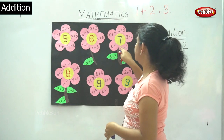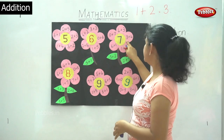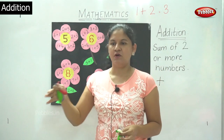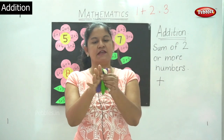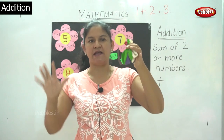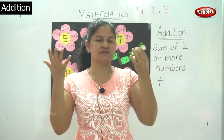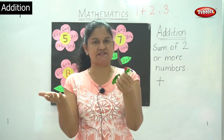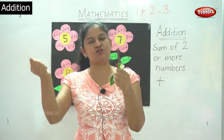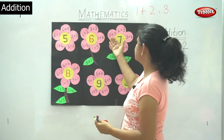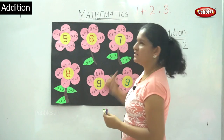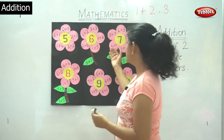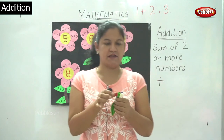So 4 plus 3 gives me 7 or 3 plus 4 gives me 7. Now I am having 7 balloons in my left and no balloons in my right. When I add up, 7 plus 0 gives me 7 or 0 plus 7 gives me 7. The next concept is 6 plus 1.